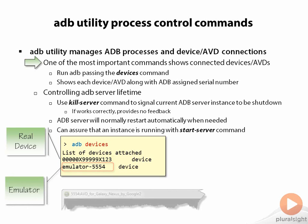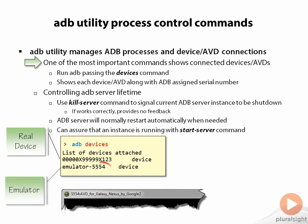The serial number starting with 'emulator-' followed by a sequence of digits indicates it's an emulator. Those digits correspond to the digits that appear in the top left-hand corner of the emulator window itself. In this case, the number 5554 is the TCP socket number that ADB is communicating to that emulator with. The key thing to know is that the number in the serial number from ADB will always match the number shown in the emulator window.